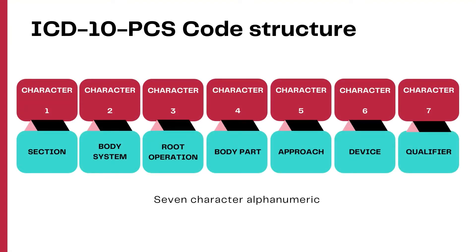As we all know, there are seven characters in ICD-10-PCS that are used to build a code based on the procedures performed. These are the seven characters: section, body system, root operation, body part, approach, device, and qualifier.